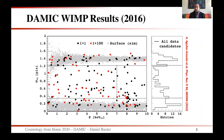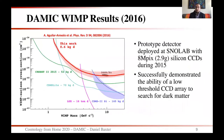We used all of this in our 2016 results from a prototype detector at SNOLAB, with data shown in energy and reconstructed sigma. We used this sigma variable to perform a fiducial cut, removing surface events at the back (high sigma) and front (low sigma) of our detector. This allowed us to cut out a low-background fiducial region to set dark matter limits. With this, we set very competitive limits with only 0.6 kilogram-days. The prototype used 8-megapixel, 2.9-gram silicon CCDs and took data during 2015, successfully demonstrating the ability of a low-threshold CCD array to search for dark matter.